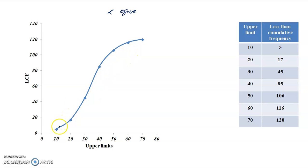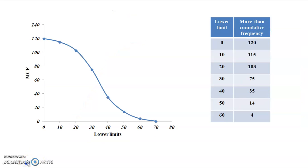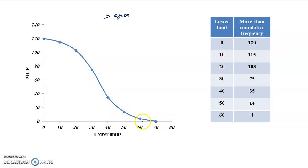If we work with both less than and more than cumulative frequencies, we can plot both ogive curves together. For example, we plot points such as 0 and 120, 10 and 150, 20 and 103. That is how we plot. We draw a smooth curve through the plotted points.